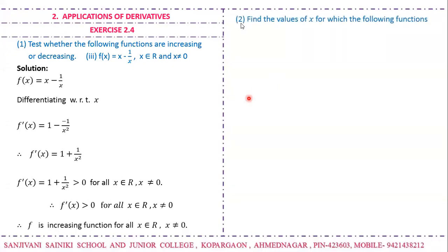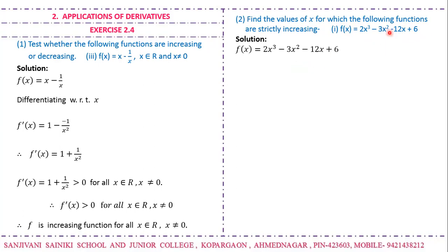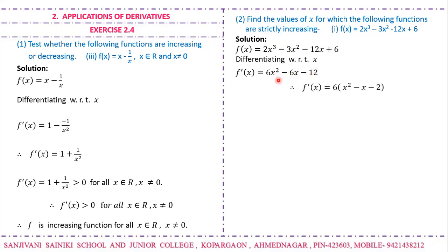The next example: find the values of x for which f(x) = 2x³ - 3x² - 12x + 6 is strictly increasing. Differentiating, we get f'(x) = 6x² - 6x - 12. Taking 6 common, we get x² - x - 2, which is not a perfect square, so we factorize it: the factors are (x - 2) and (x + 1).